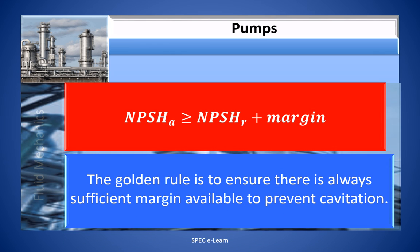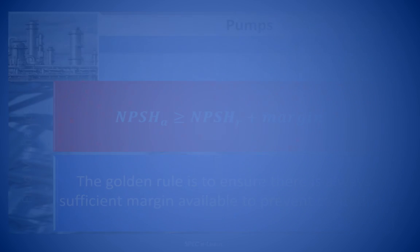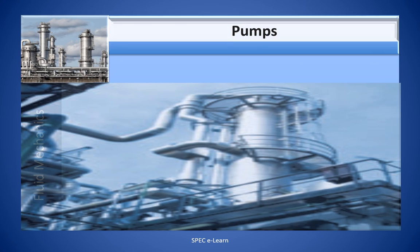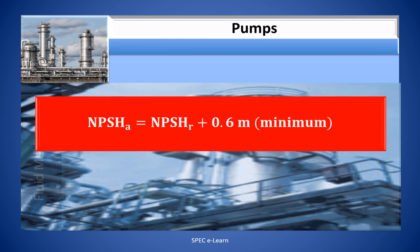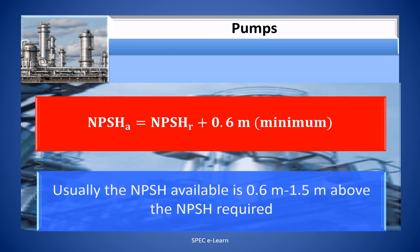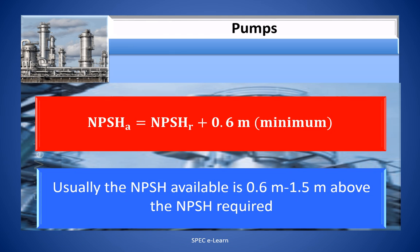Hence, NPSH available must be greater than or equal to NPSH required plus a certain margin. The golden rule is to ensure there is always sufficient margin available to prevent cavitation. The usual design practice is to ensure the NPSH available is 0.6 meters to 1.5 meters above the NPSH required.